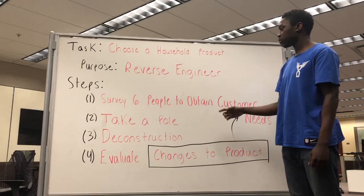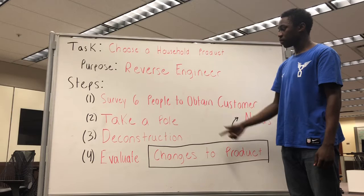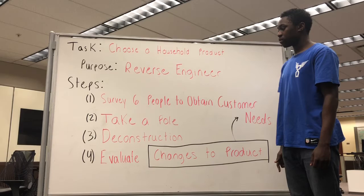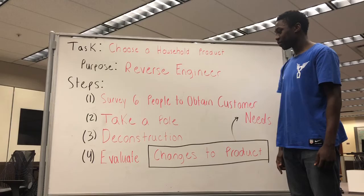Second, we created a poll for the previous interviewees to complete, ranking the customer needs in terms of importance. With these rankings in mind, we then conducted the deconstruction process to get a better idea of how the product was composed. Once this was done, we evaluated certain changes we could make to better the product based on the desired customer needs.